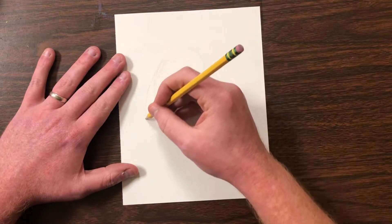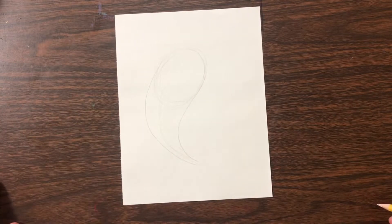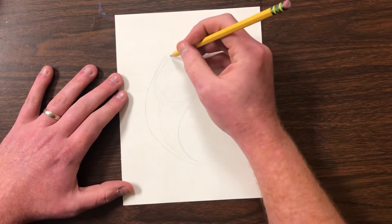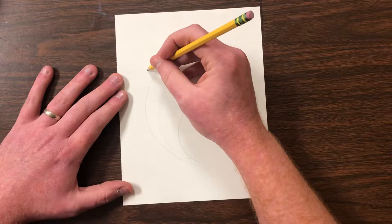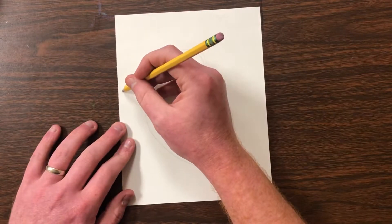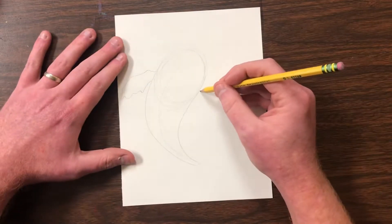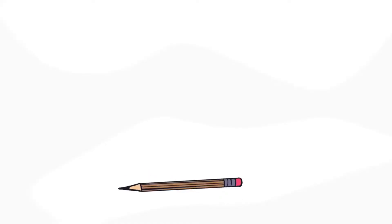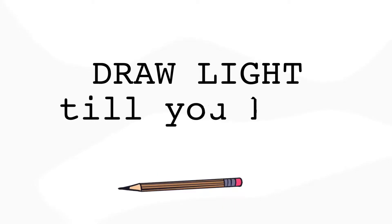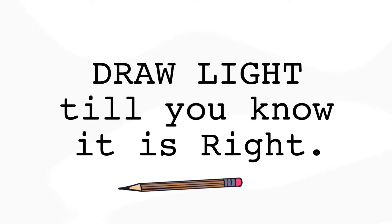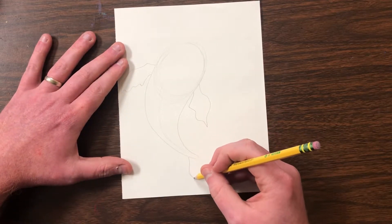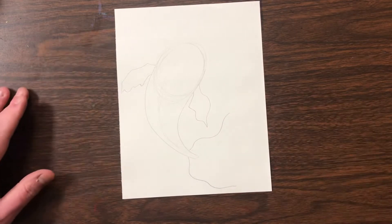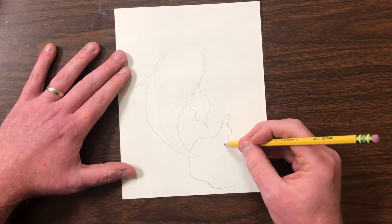I'm going to draw a line on the left side and a line on the right, and it's going to get pointy at the end. Now let's draw our fins. I'm going to start by drawing a curved line and then a wiggly line on the bottom. Remember to draw lightly. To draw the tail fin, let's draw a wiggly line on the left and another one on the right, then connect those two lines with another wiggly line.